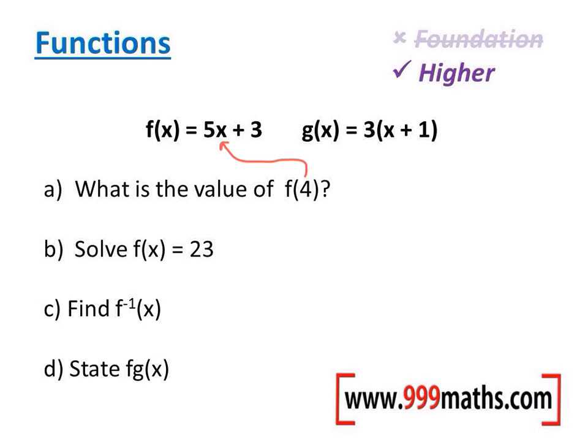So when I substitute 4 into there, we get 5 lots of 4 add 3. 5 lots of 4 is 20, add 3, makes 23.